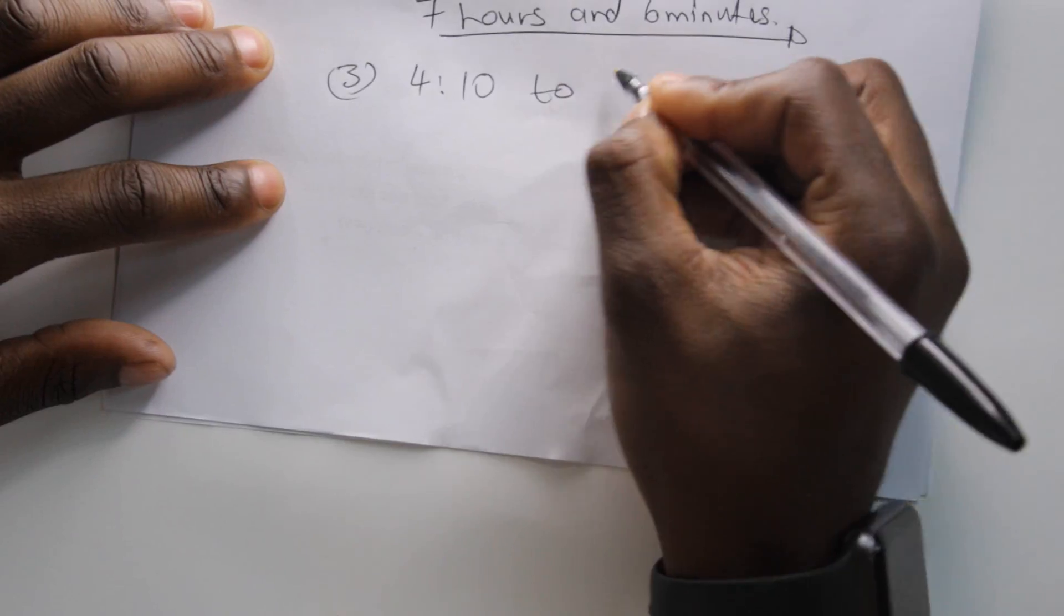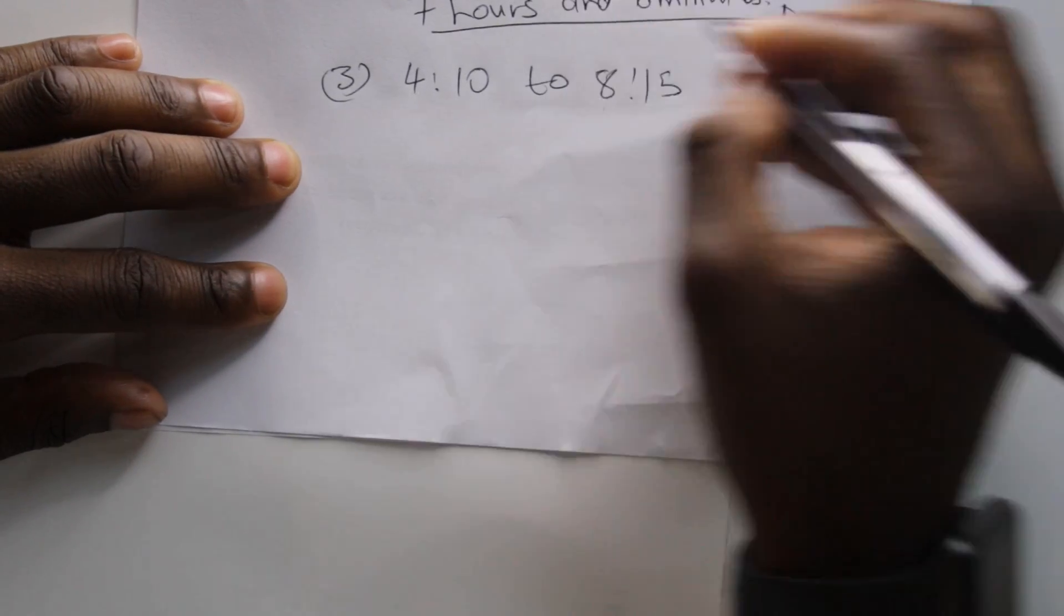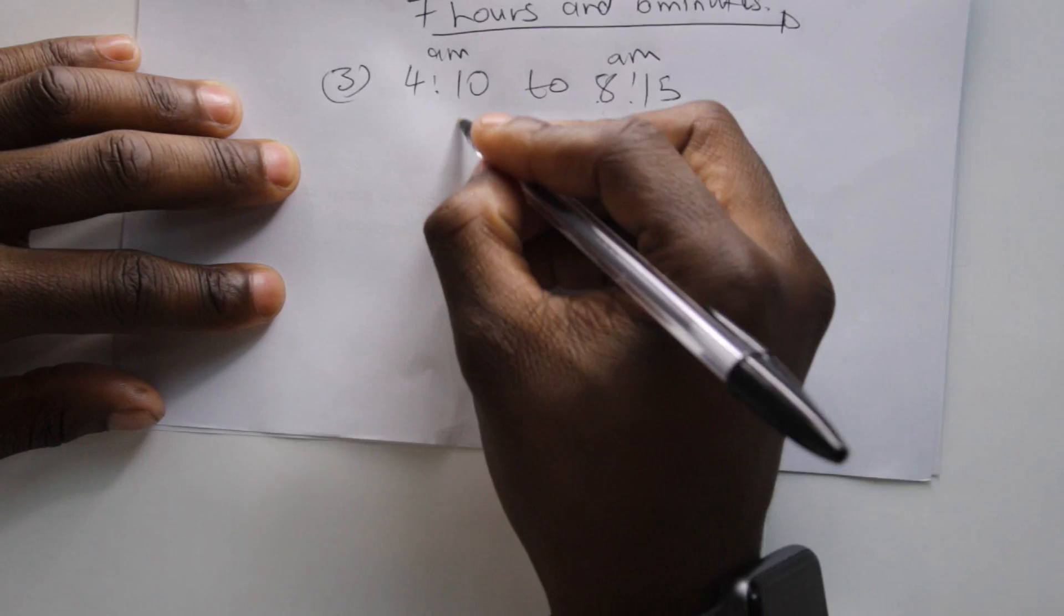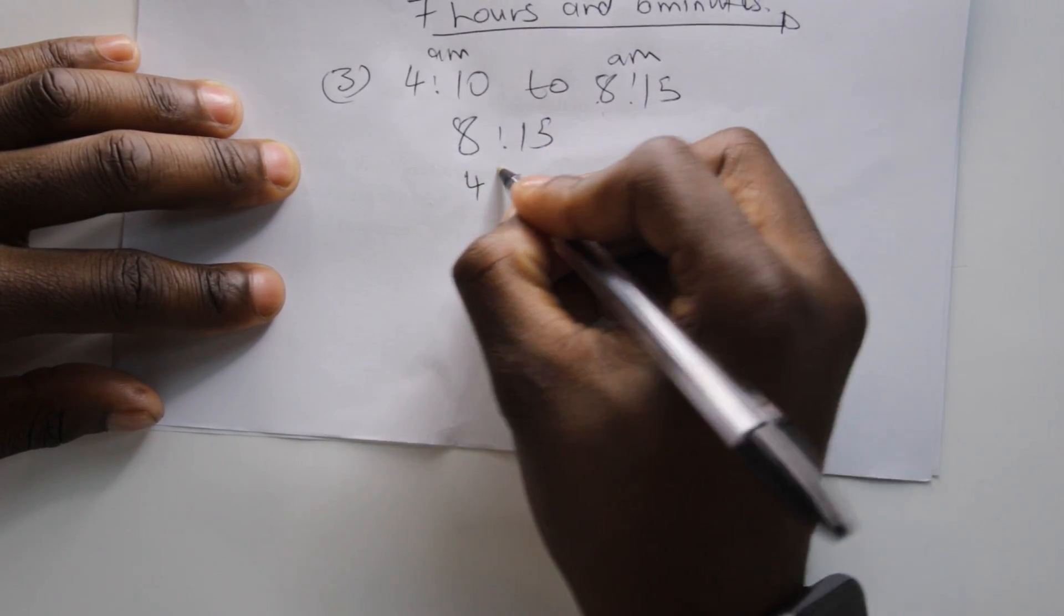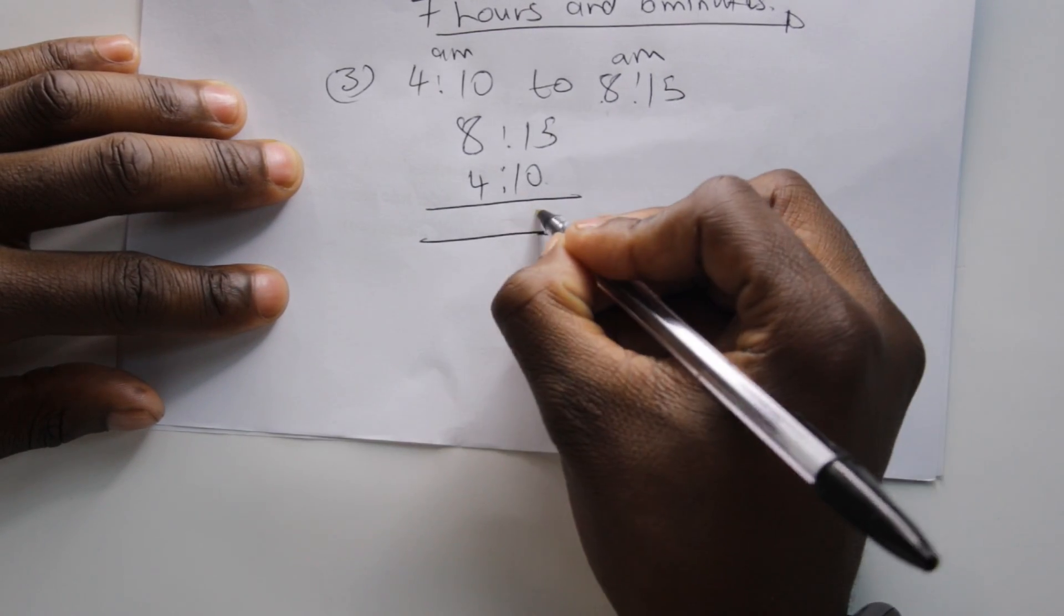If we have 4:10 to 8:15, we'll first note that which format are these. AM. So we'll take the biggest hour on top, smallest hour on the bottom. Subtract 10 from 15, we'll be left with 5 minutes. Subtract 4 from 8, we'll be left with 4 hours.